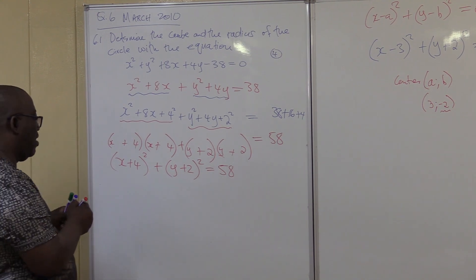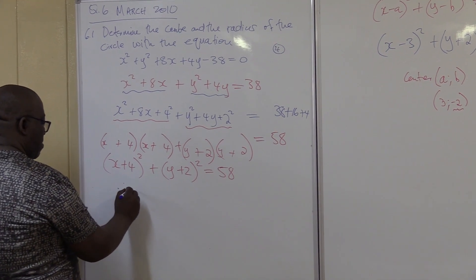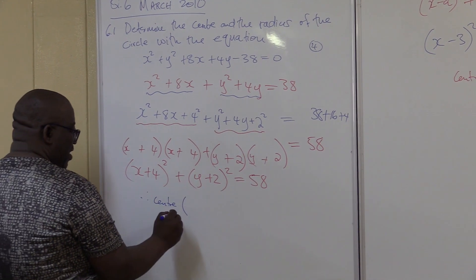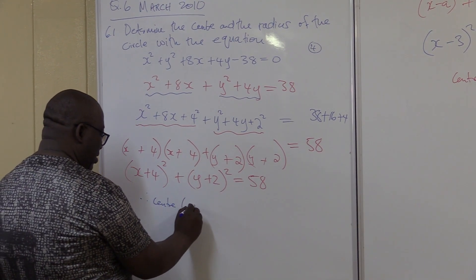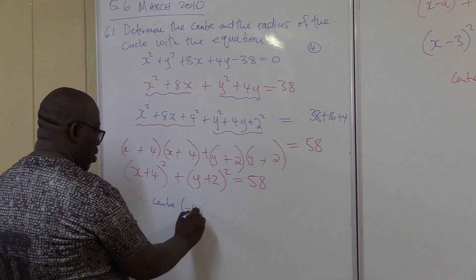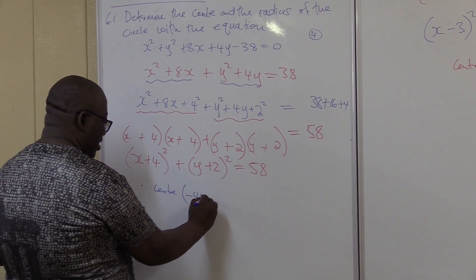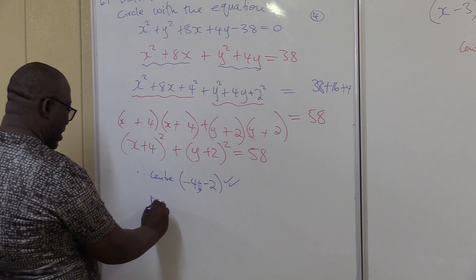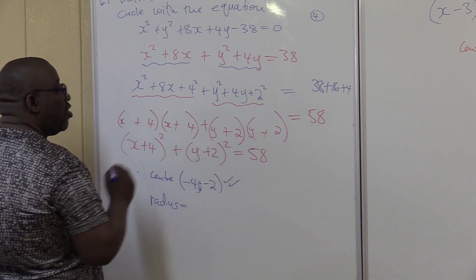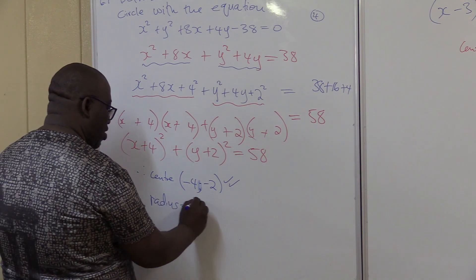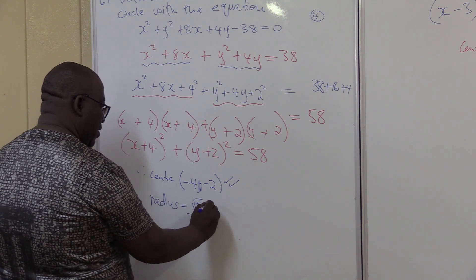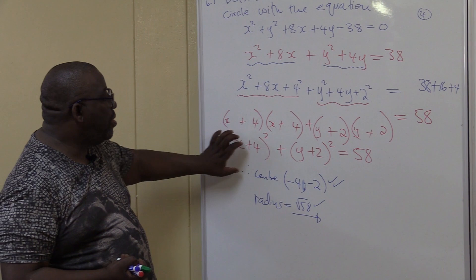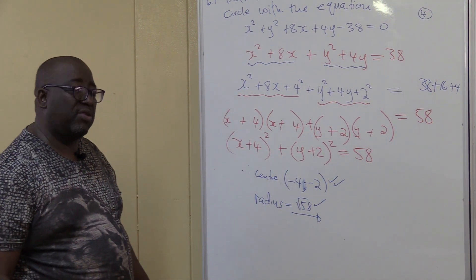Therefore, my center: remember, in the standard form this is negative, so the answer will be minus minus — it will be minus 4. My y-coordinate is minus 2. These are the coordinates of the center: (-4, -2). My radius will be the square root of r squared, which is the square root of 58. This is how you go about finding the center and the radius. The idea was for you to be able to complete a square in that particular way.